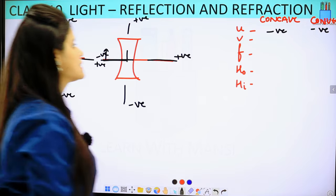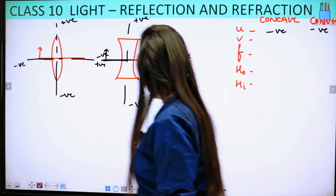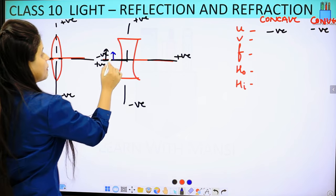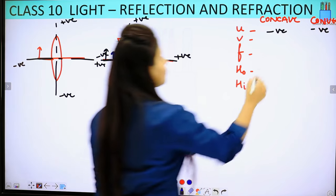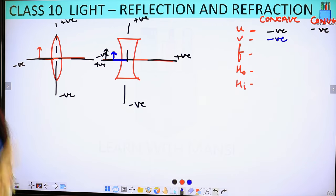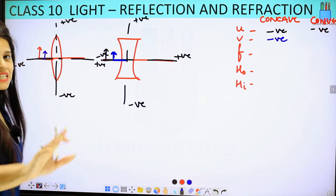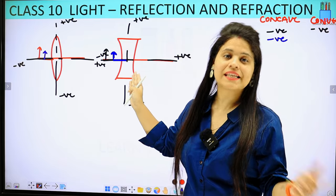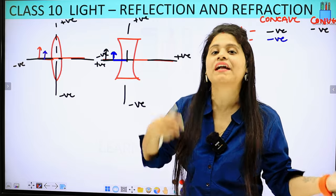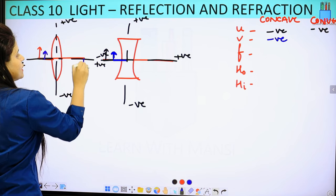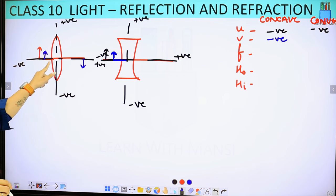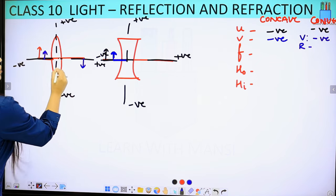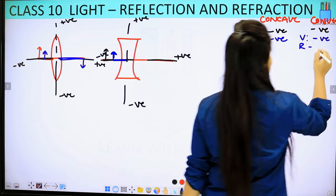Now when we talk about image distance for the concave lens, the image is always virtual and erect — it forms on the same side as the object, so the image distance is always negative. For the convex lens, there are two types of images: virtual and erect, or real and inverted. If the image is virtual and erect, the image distance is negative. If the image is real and inverted, we measure it on the positive side, so it is positive.